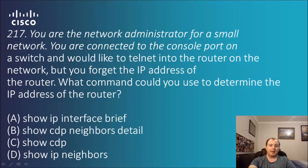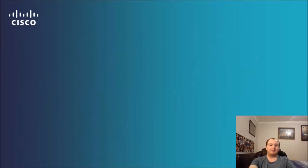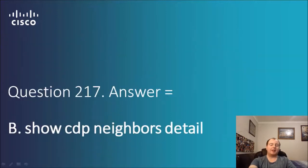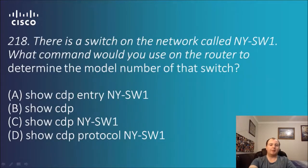Question 2.17: you are connected to the console port on a switch and would like to find the router on the network, but you've forgotten the IP address of the router. What command could you use to determine it? Options include show IP interface brief, show CDP neighbors detail, show CDP, or show IP neighbors. The answer is B — show CDP neighbors detail — that command will bring up the IP address information for you.